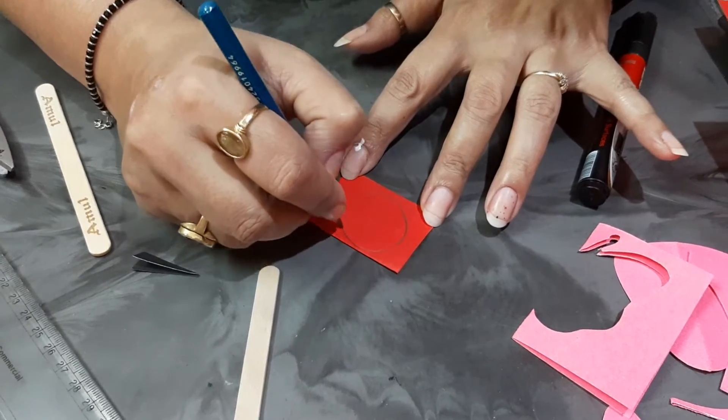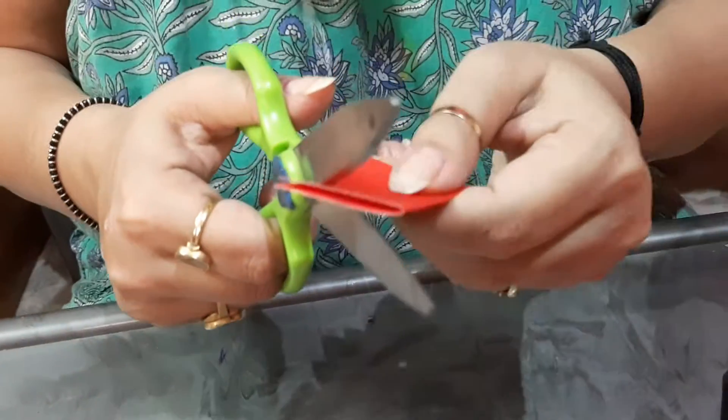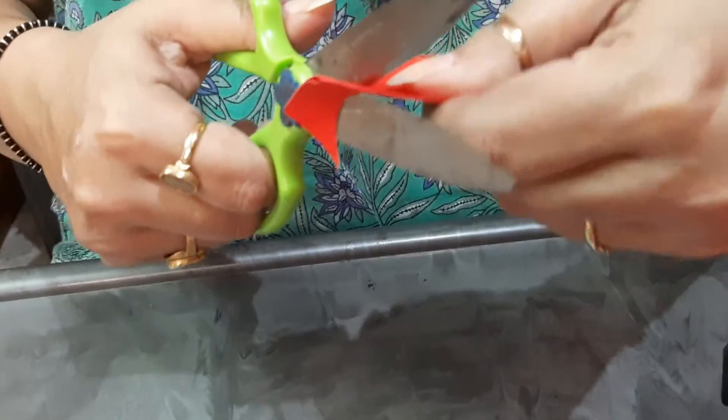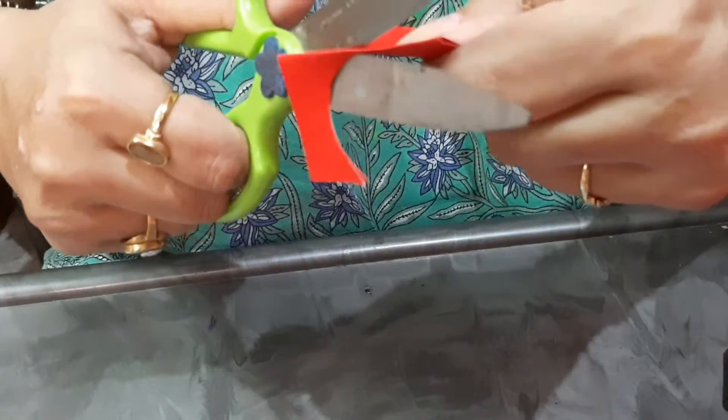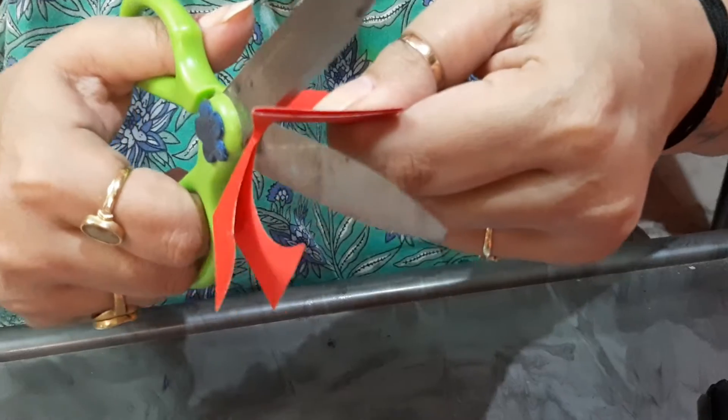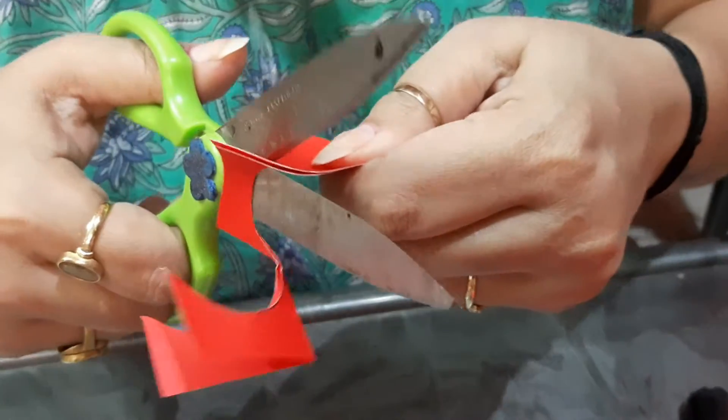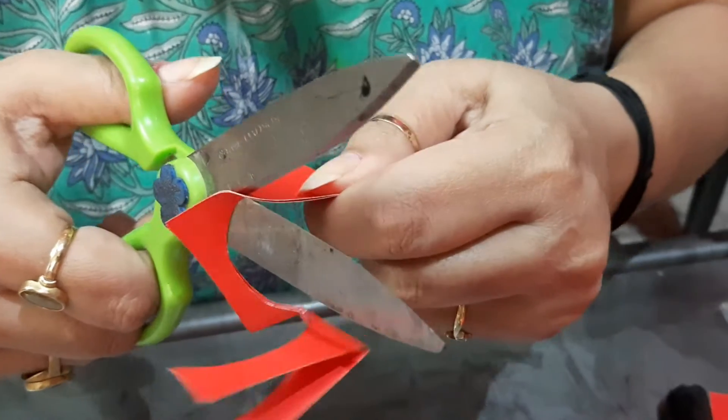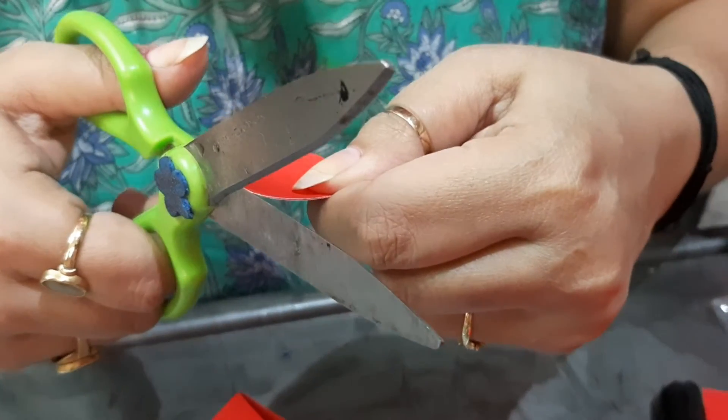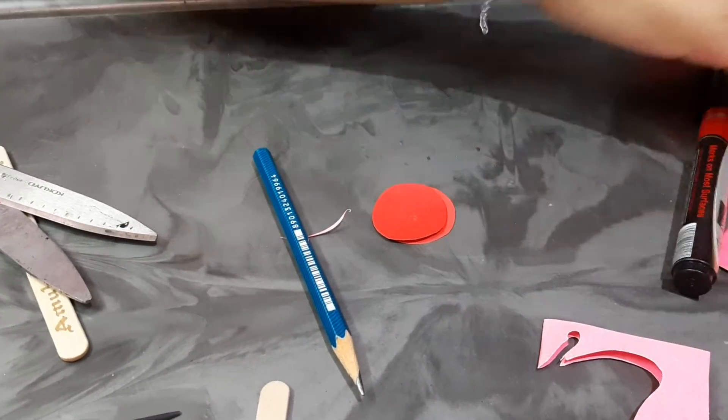I draw the circle. I draw two circles. I take one more yellow sheet.